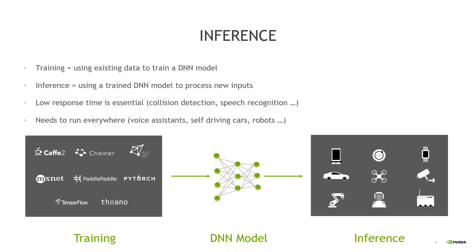Previously there has been a lot of discussion about techniques for accelerating the model training part, so here I would like to emphasize that efficiency is just as important in inference. For example, consider autonomous vehicles. From the moment you give a driving assistant model a new input from a sensor feed, it is crucial to have very low response time to the resulting steering decision. Another example would be voice-based assistance. When you give it a command, the response needs to be quick to maintain any sort of interactivity in the application.